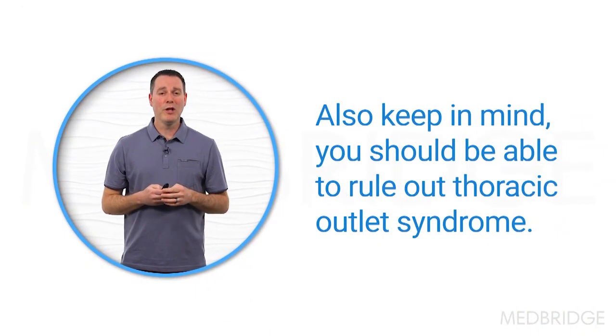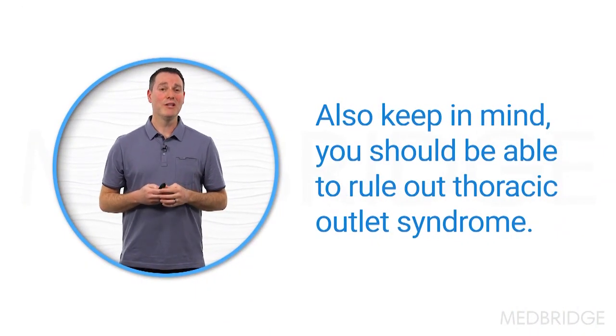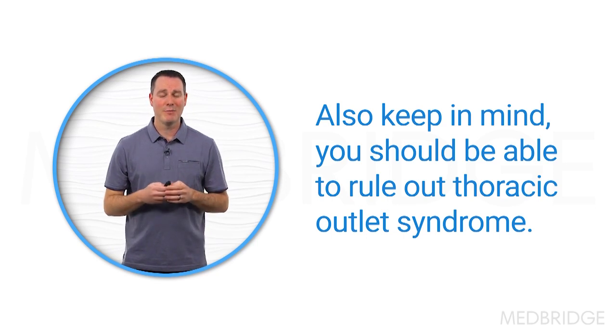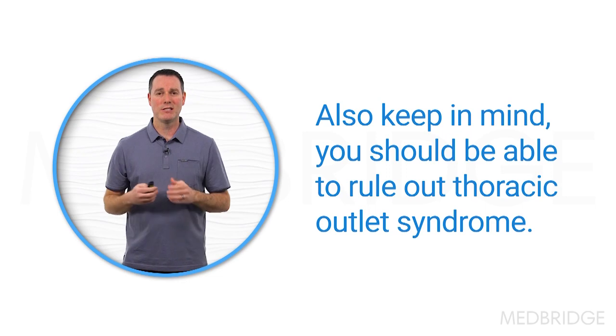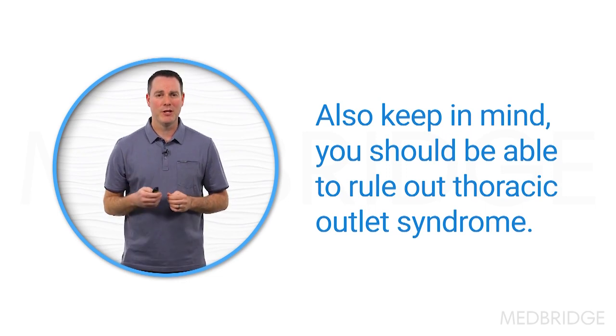Also keep in mind, you've got to be able to rule out thoracic outlet syndrome. I think it presents to us more than we see it — we call it a strain, a sprain, or a SLAP tear because patients also oftentimes report loss of velocity and dead arm. They may even report having the yips. So I think we need to keep thoracic outlet syndrome in the back of our head as a differential diagnosis.